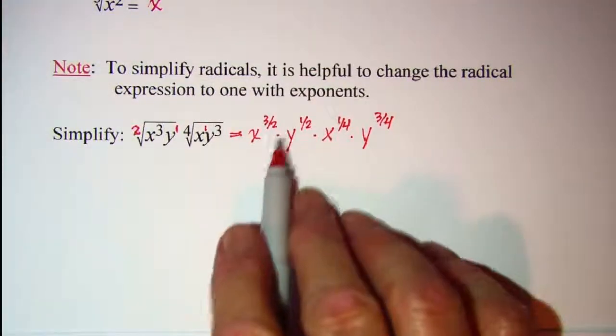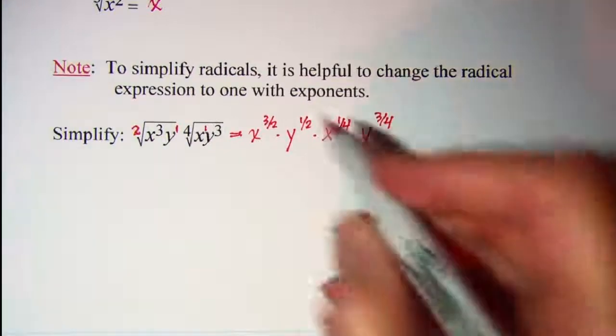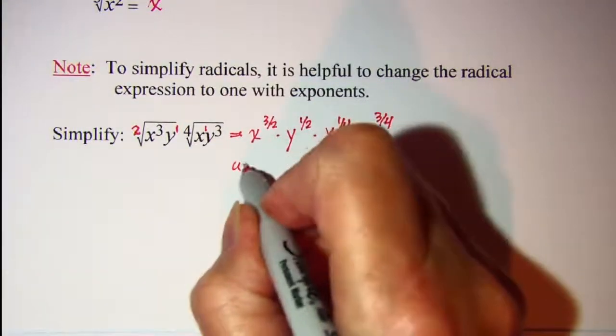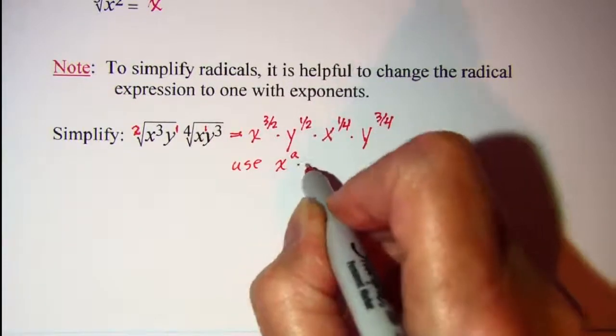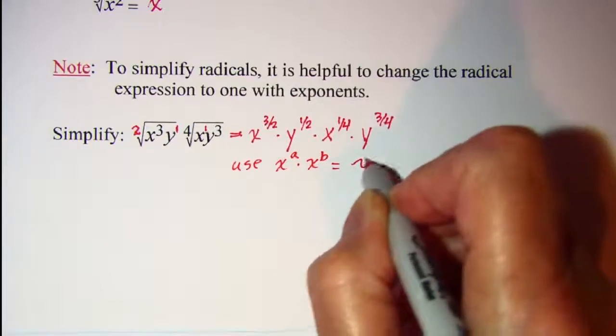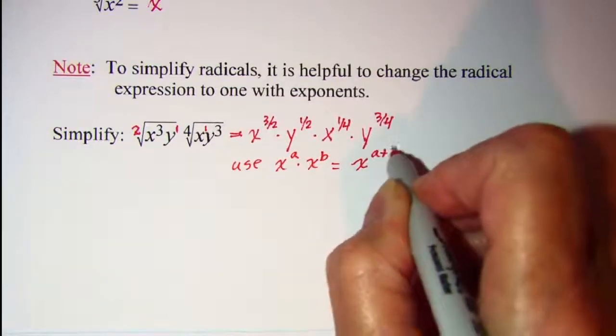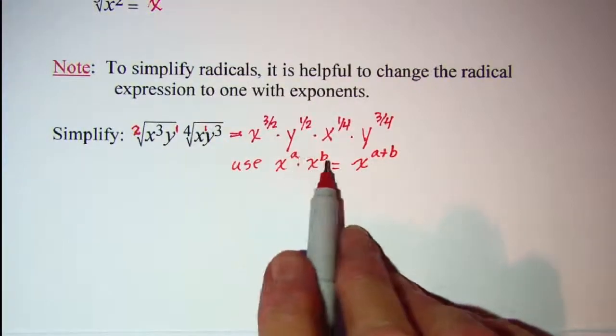Now I can simplify this expression by adding the exponents. So we'll use the rule that says x to the a multiplied by x to the b is equal to x to the a plus b. When your bases are the same you can add your exponents.